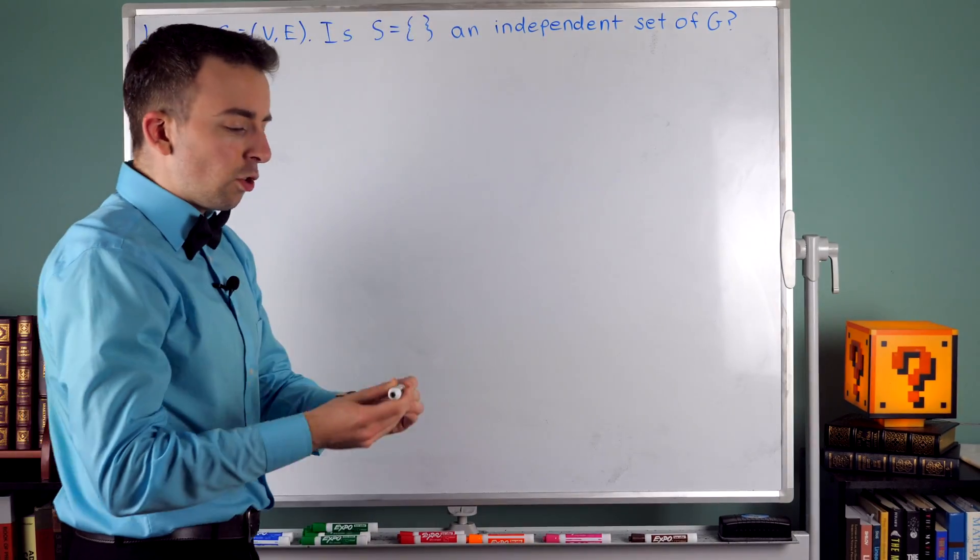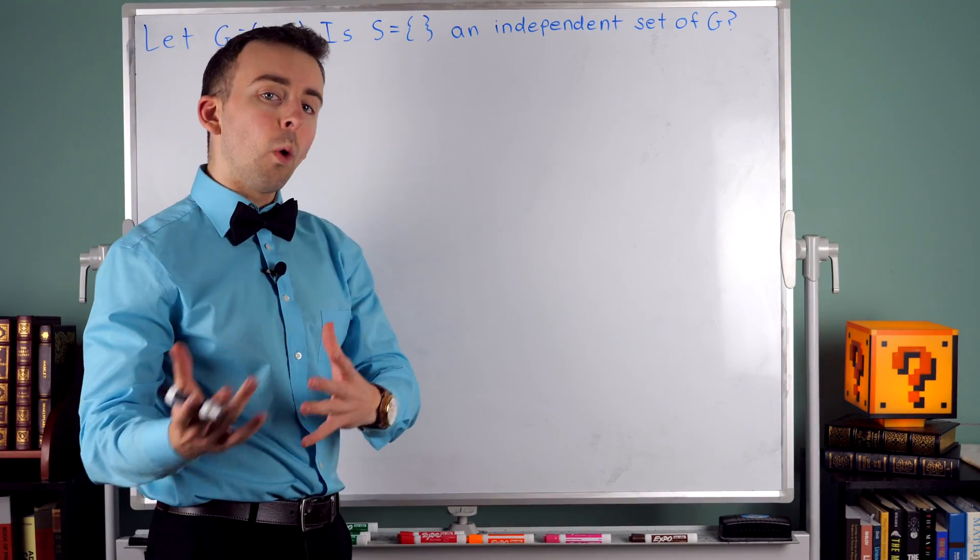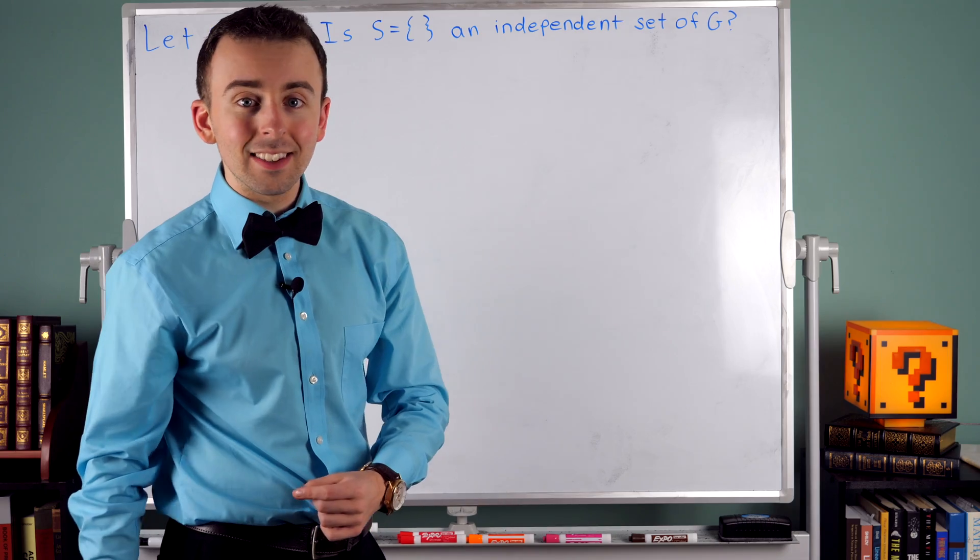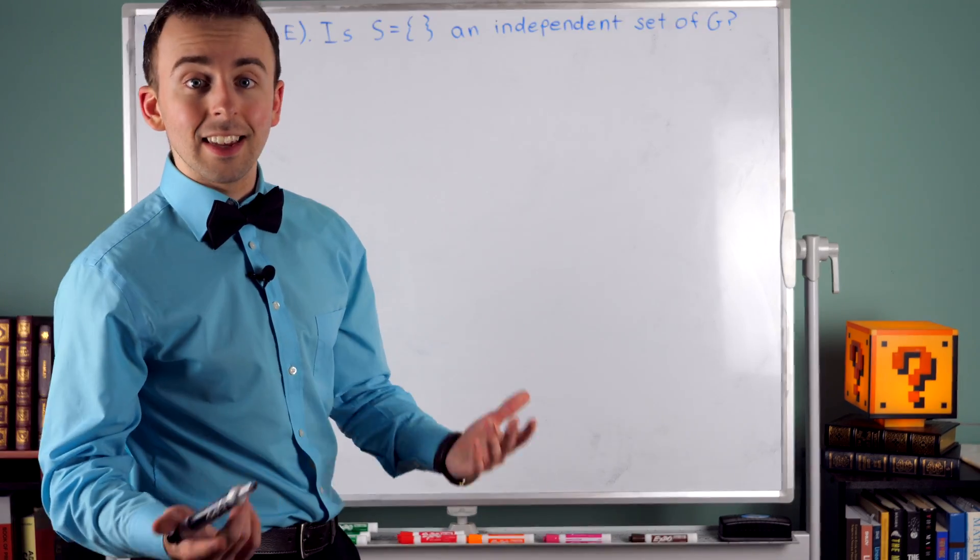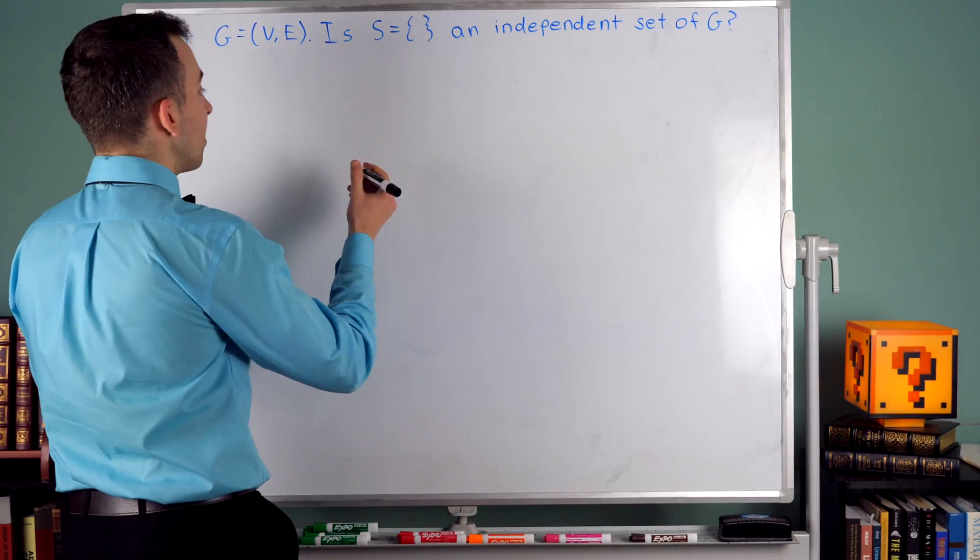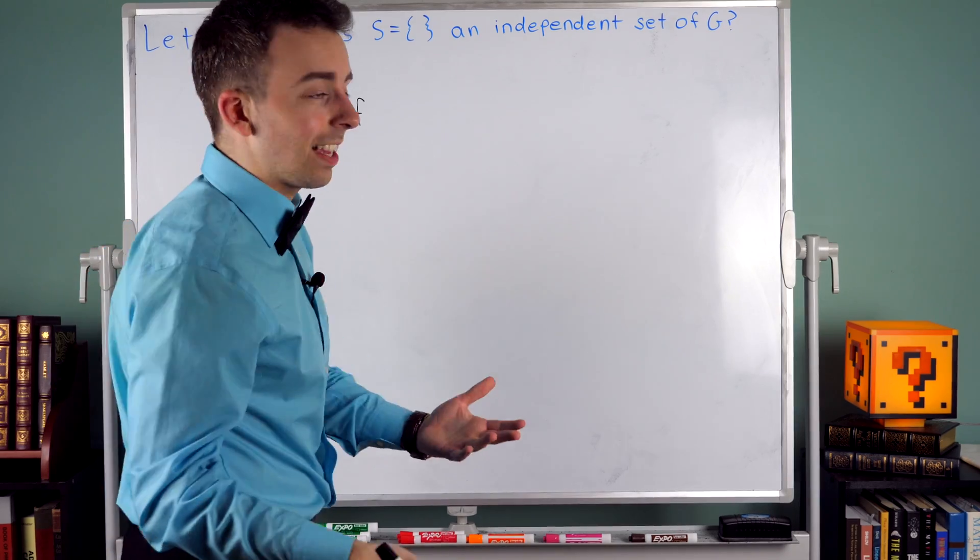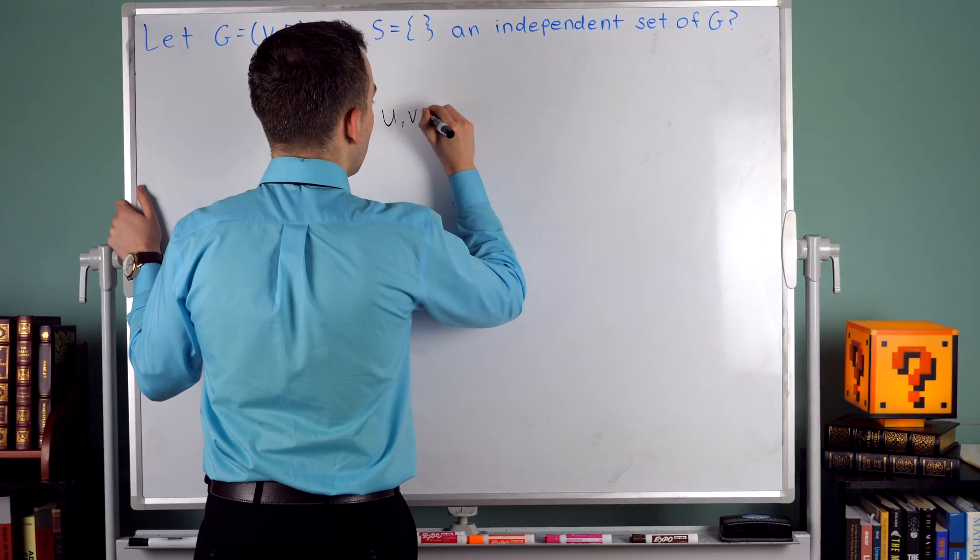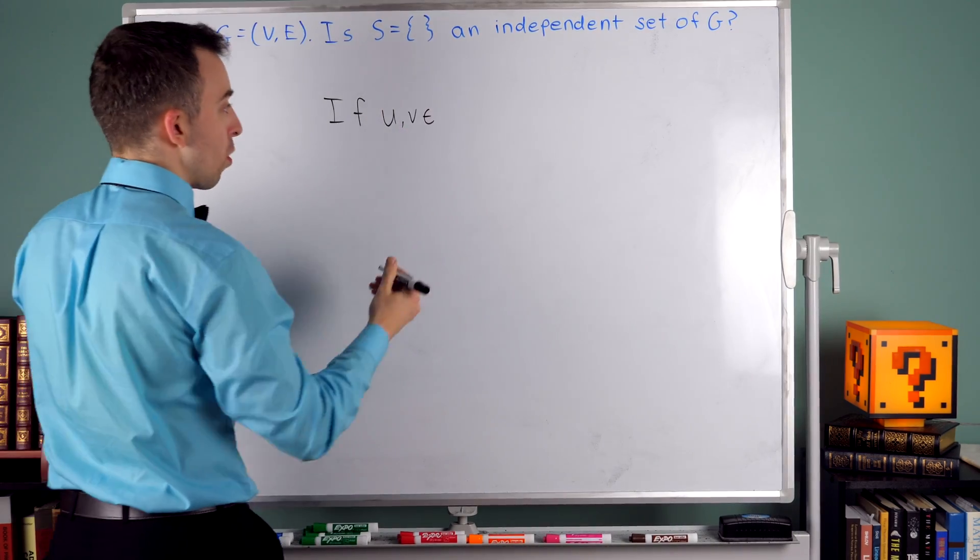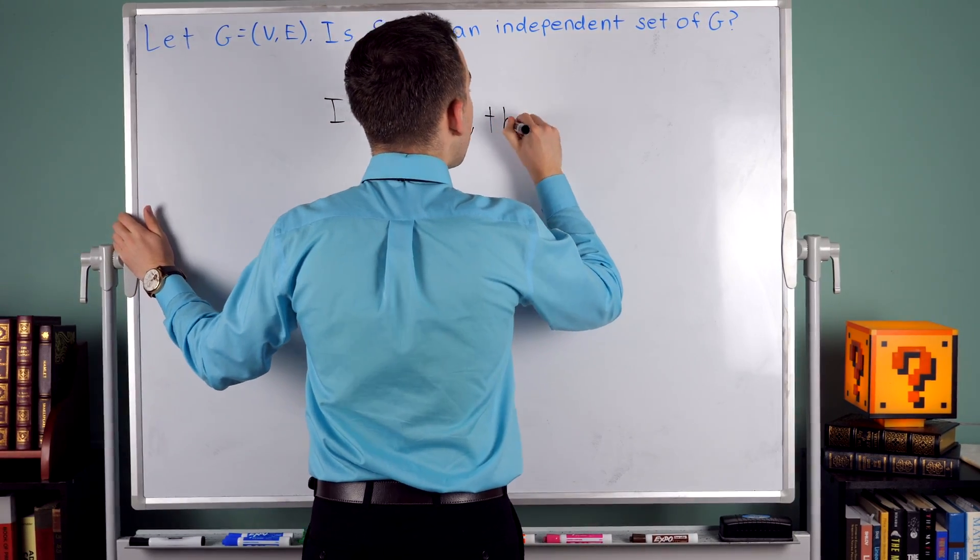So again, what condition would a set S need to fulfill in order to be an independent set of a graph? Well, let's just assume that S is a subset of the vertex set. Then the condition that S needs to fulfill to be an independent set is this. If we take two vertices, U and V, just two arbitrary vertices from S,